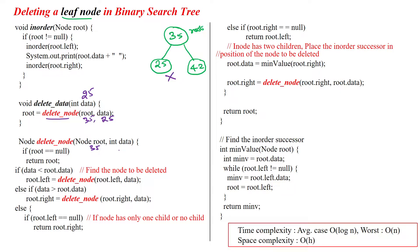We take those values into the method, then we are checking root equal to null, which is false. Then we are checking data less than root dot data: 25 less than 35, which is true.